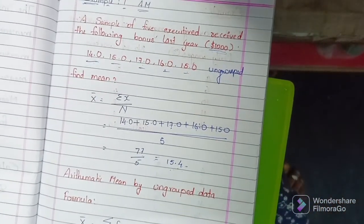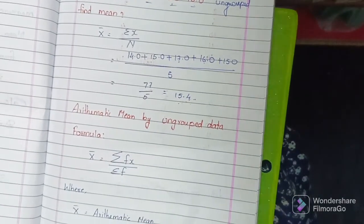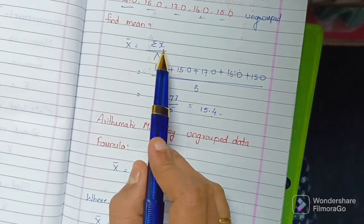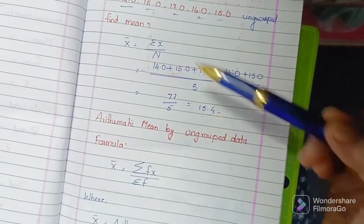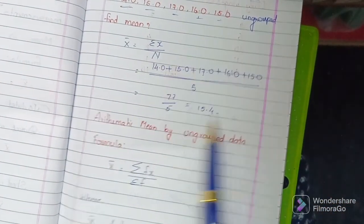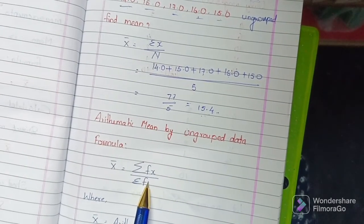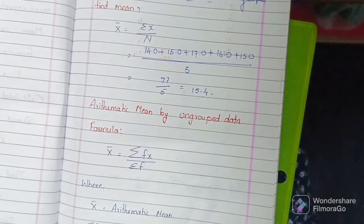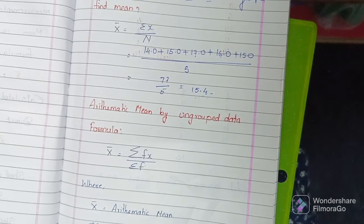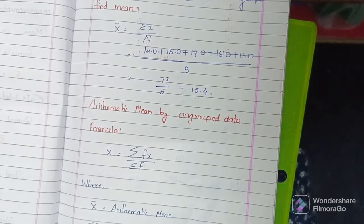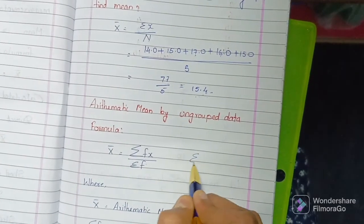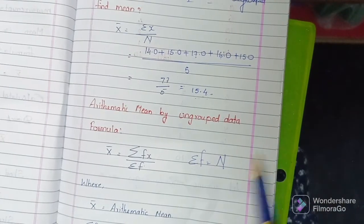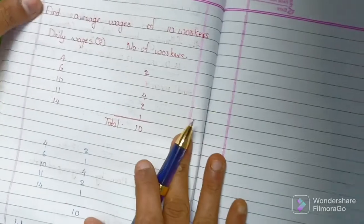Now for grouped data using frequency, the formula is x̄ = Σfx / Σf. Here x̄ is the arithmetic mean, Σfx is the sum of the products of frequency and value, and Σf is the total number of items, which equals n. We will use this formula in the next example.